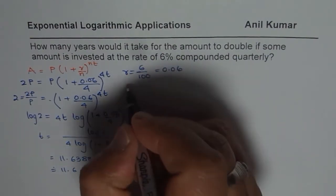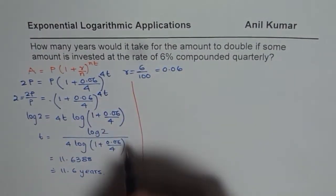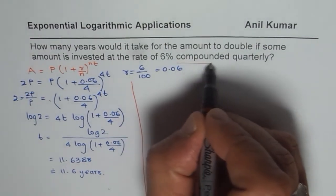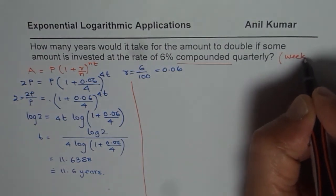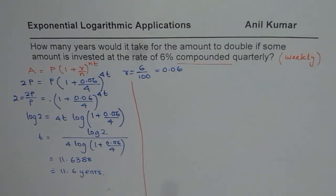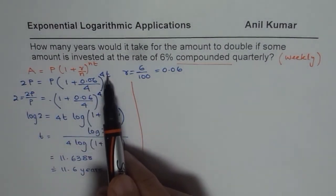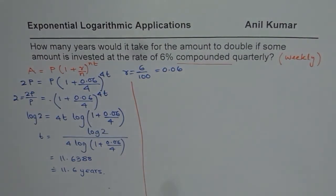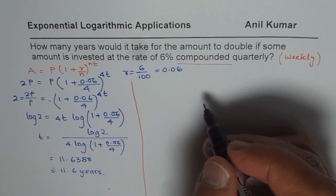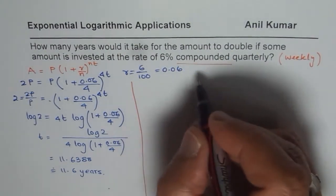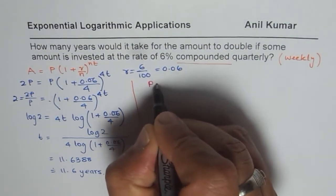As an exercise, you can see how the answer will change if the compounding period changes from quarterly to, let us say, weekly. Weekly means there are 52 weeks in a year, so you divide and multiply by 52 and figure out the answer. What we will do now is another example — we will see what happens if we compound continuously.